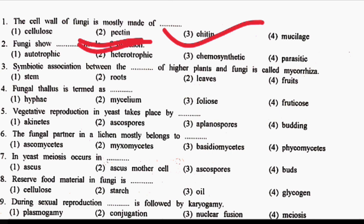Next question: the symbiotic association between the DASH of higher plants and fungi is called Mycorrhizae. Option 1: Stem. Option 2: Root. Option 3: Leaves. Option 4: Fruit. The correct answer is Option 2, that is Root — the association between roots of higher plants and fungi is called Mycorrhizae.